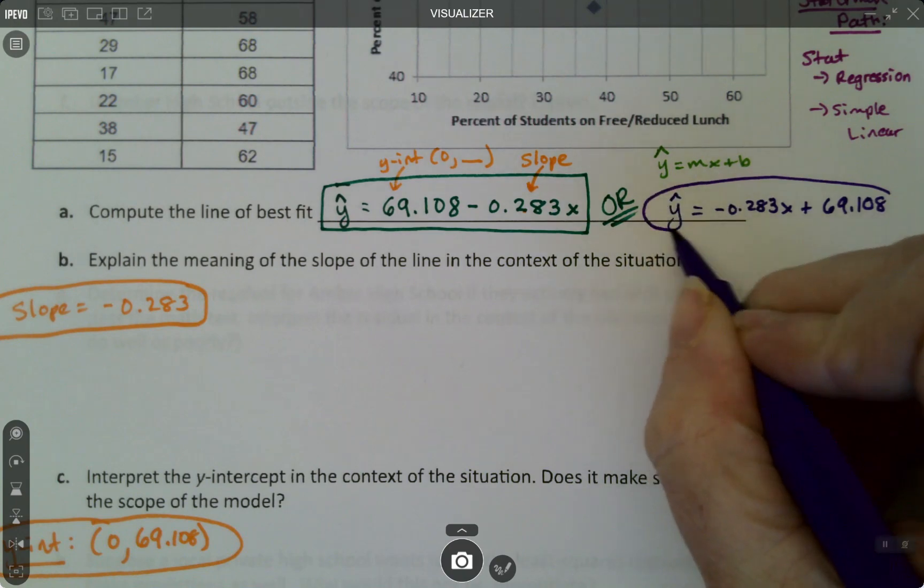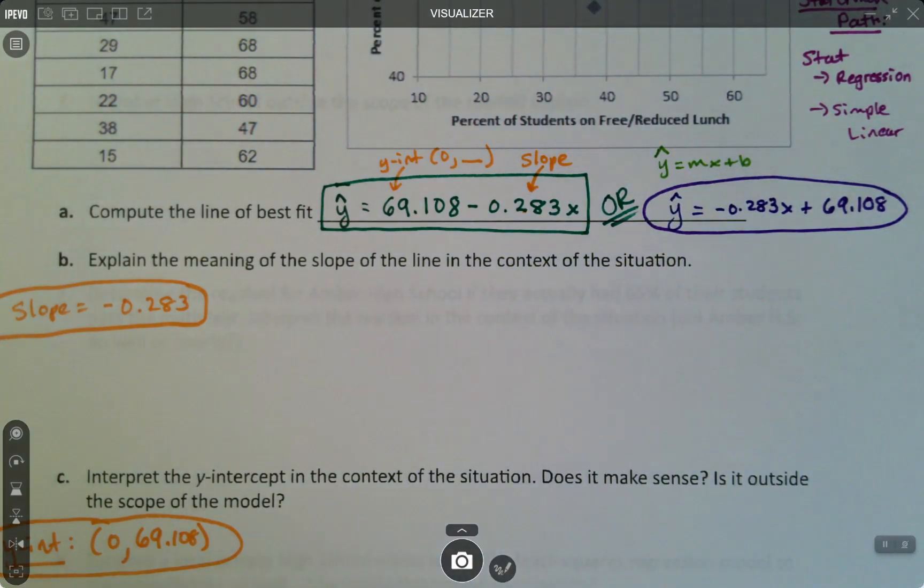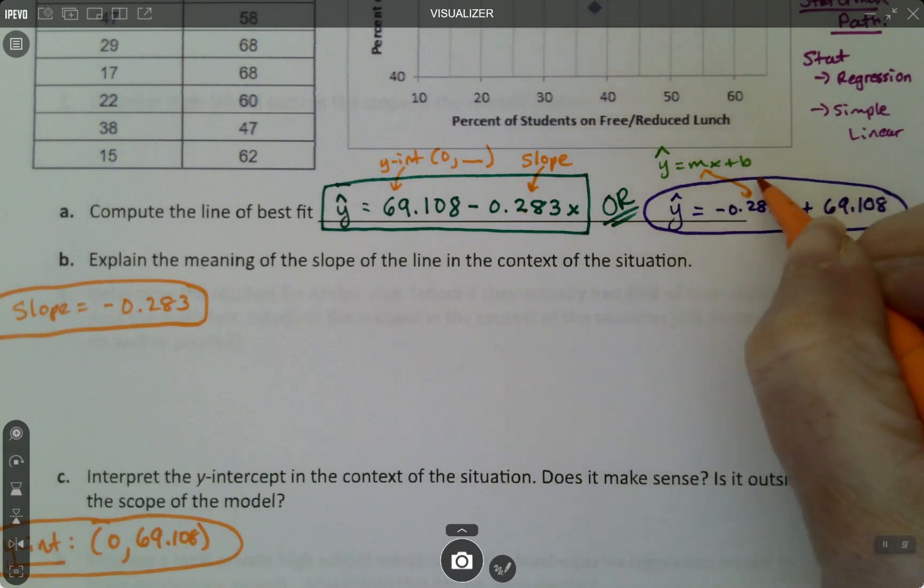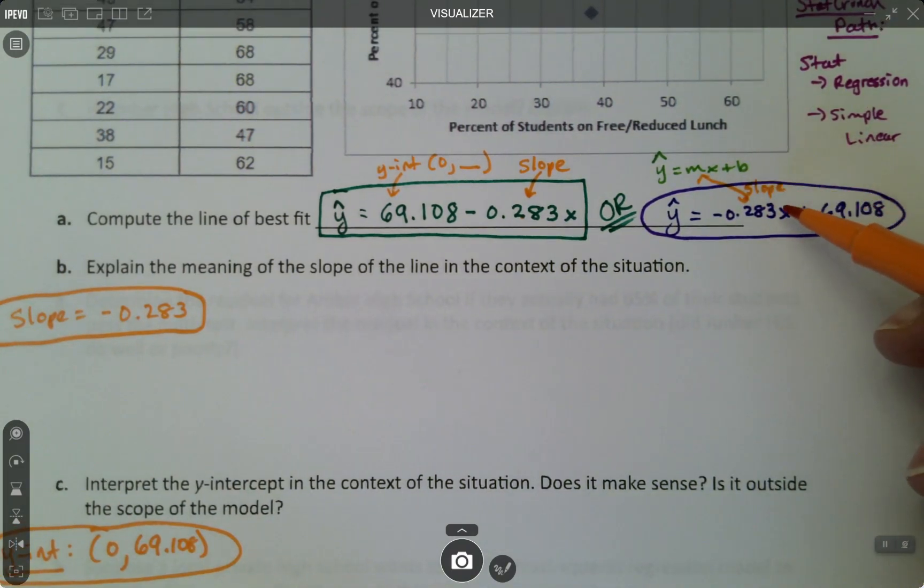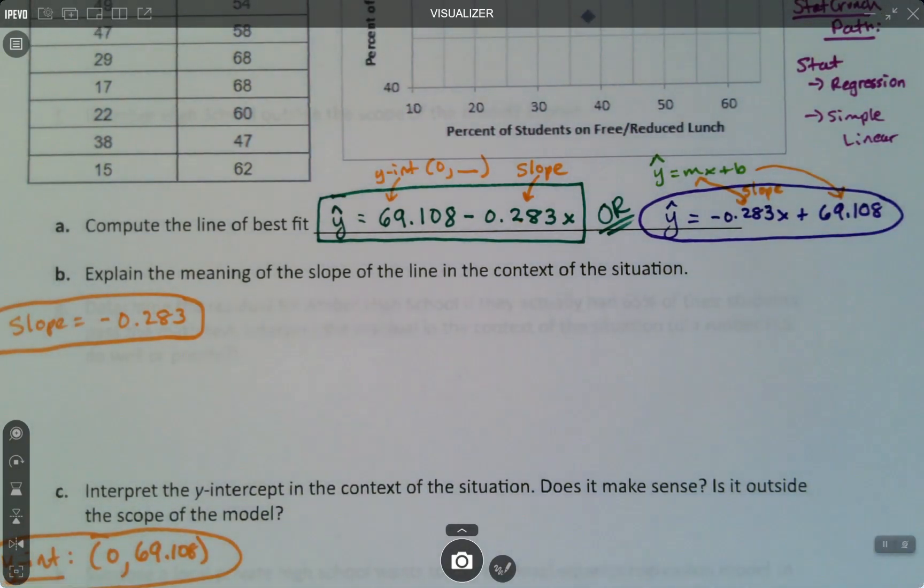Write it whichever way you are comfortable. So the slope is that number, the slope is always the one that's attached to the X variable. And the Y-intercept value, the Y value for the Y-intercept I should say, is the back number.